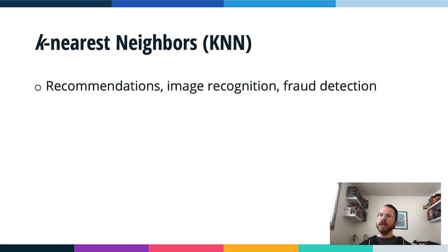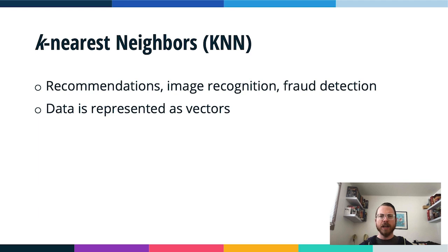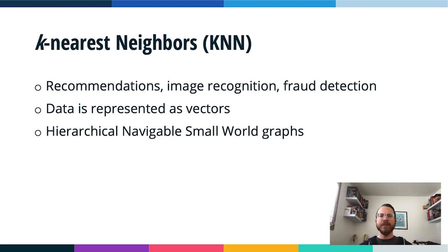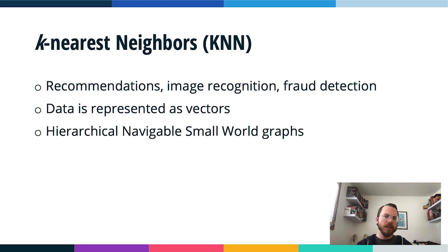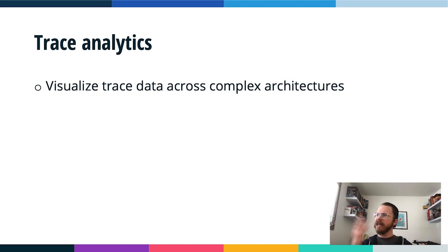The KNN plugin finds the nearest neighbors for a particular query. I think recommendations are the canonical use case, but it can also be used for image recognition and fraud detection. Data becomes a representation as vectors, and those vectors are plotted into a hierarchical navigable small world graph to find the most similar items. For fraud detection, KNN can help answer whether a transaction looks similar to something happening elsewhere.